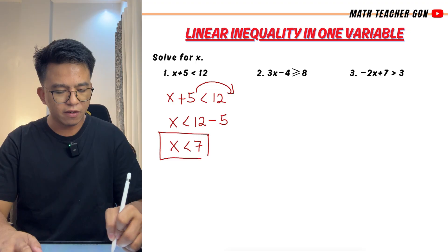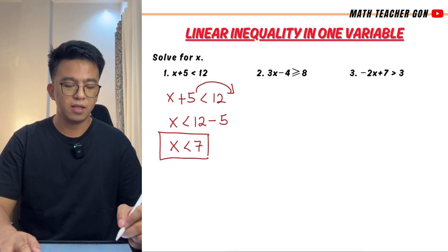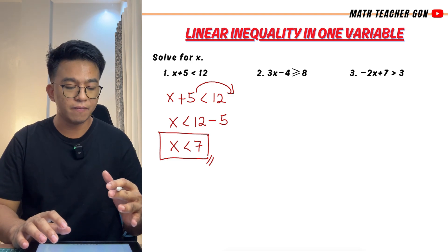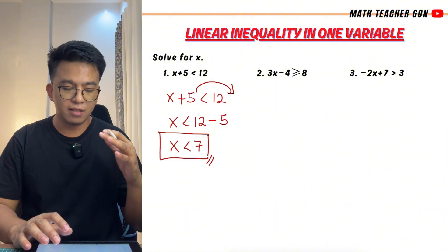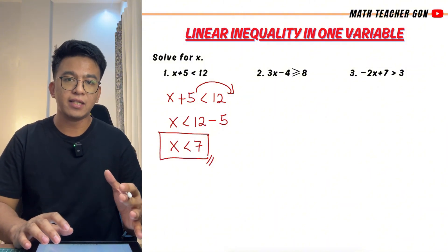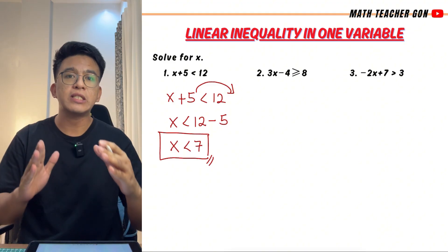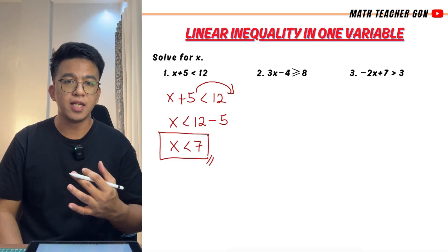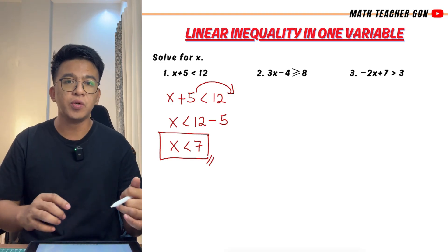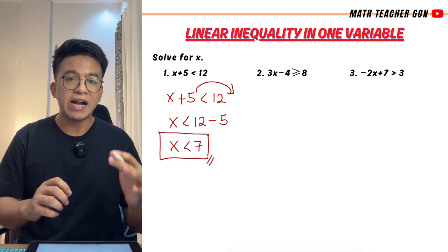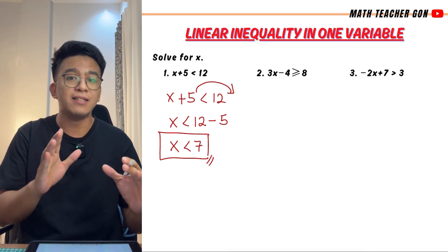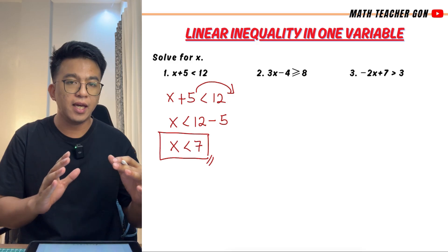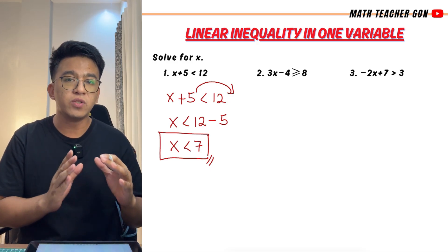And this is the answer for item number one. Now let me explain what it means if we have x is less than 7. The value of x is not 7. The values of x are those numbers less than 7 — for example, 6, 5, 4, 3, and so on going down. The values of x also include fractions or decimals that are less than 7. So there are multiple values of x in this given inequality. Those are the solutions.